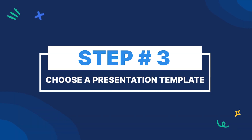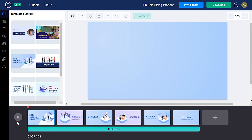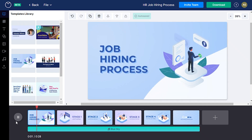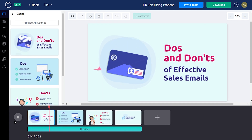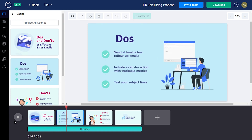Step three: choose a presentation template. The third step is to utilize templates and easily add your content. If you're questioning where to find such templates, consider using Venngage. We have a library of pre-designed multimedia presentation templates that are just begging for your content. Rather than start fresh, you can simply plug in your material. You can add your brand kit, shapes, lines, icons, photos, charts, maps, QR codes, and much more.